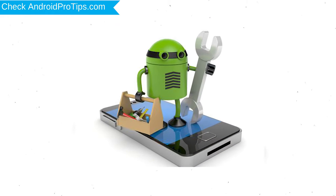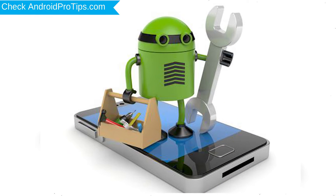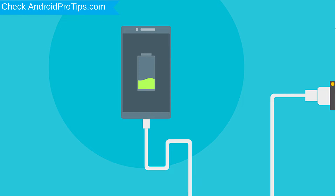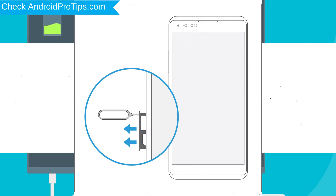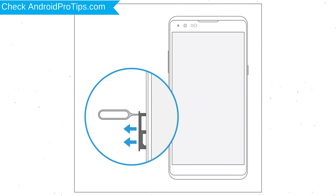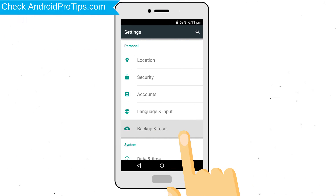Before resetting your mobile: your battery must be above 50%, remove SD cards and SIMs, and backup your Android mobile data if possible.